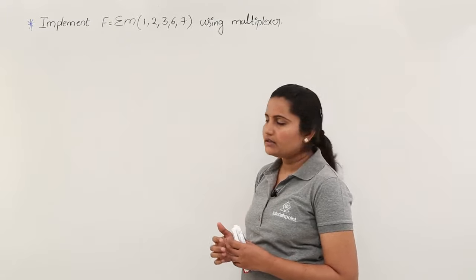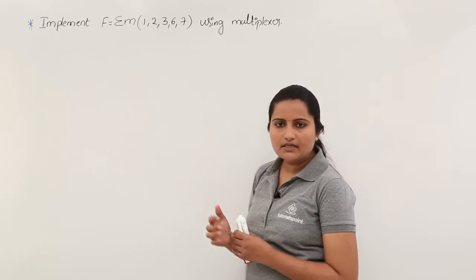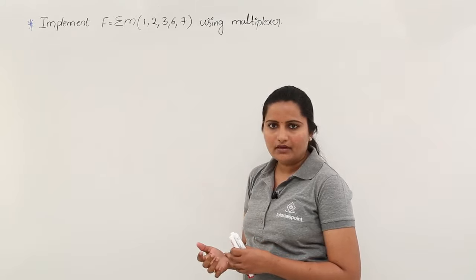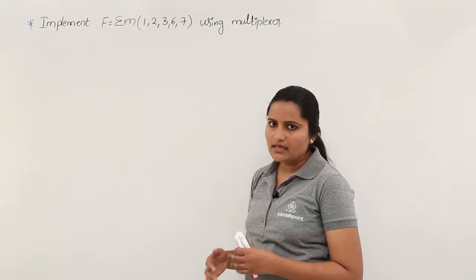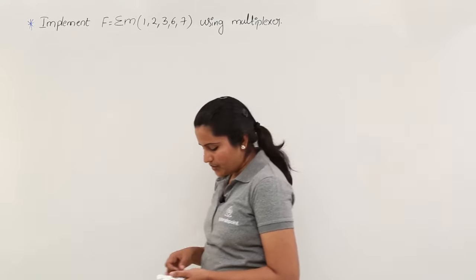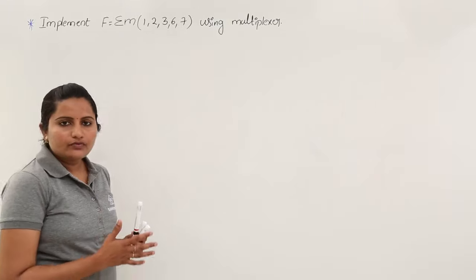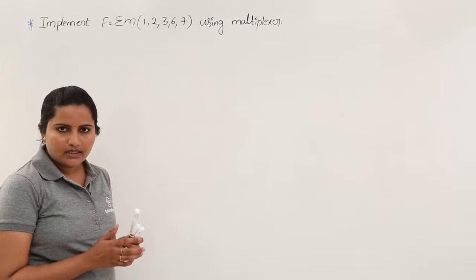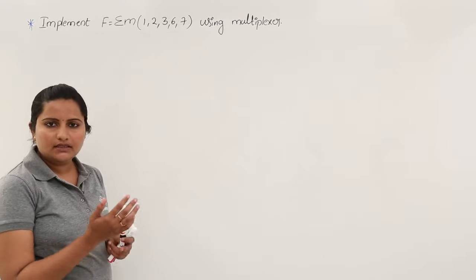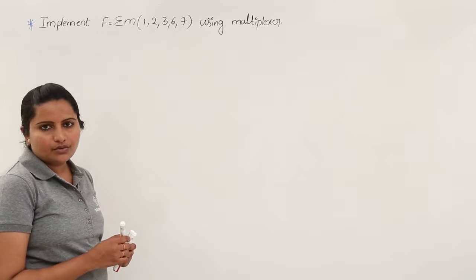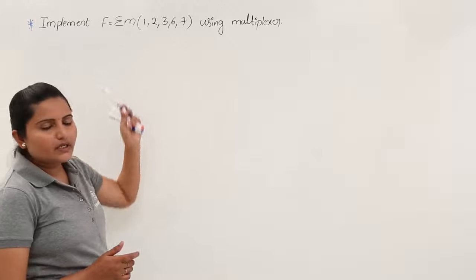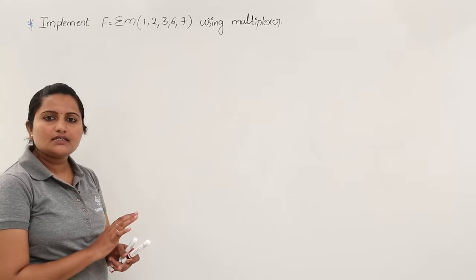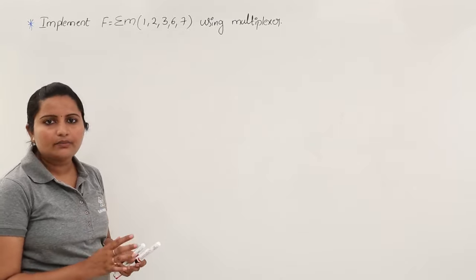We can choose which multiplexer to use based on our requirement. When min terms are given, we need to understand the combinations involved. First of all, we need to define a truth table — truth table is the initiation for any implementation.